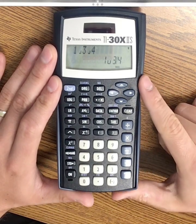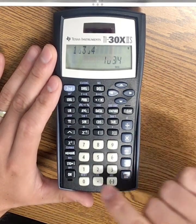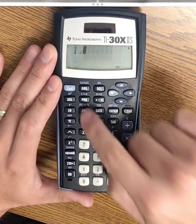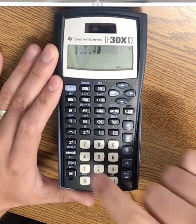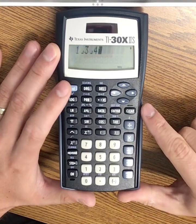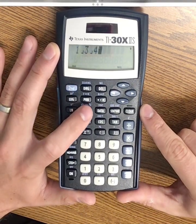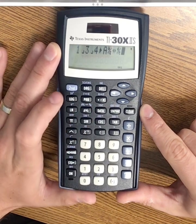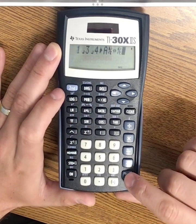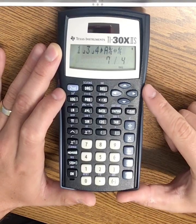Well, if I want to switch that over to an improper fraction, I can type in 1 and 3 fourths, and then click second to access that second function. Click the A, B, C button, and then press enter. And I get 7 fourths.